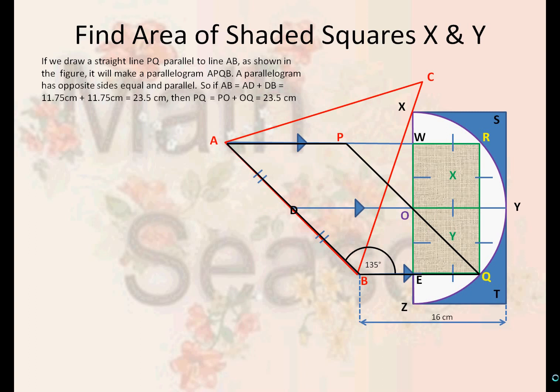So if AB equals AD plus DB, which is 11.75 cm each, for a total of 23.5 cm, then PQ is also equal to 23.5 cm.